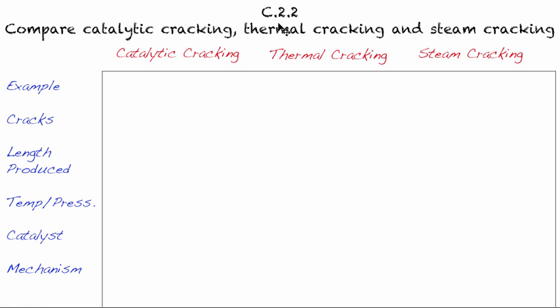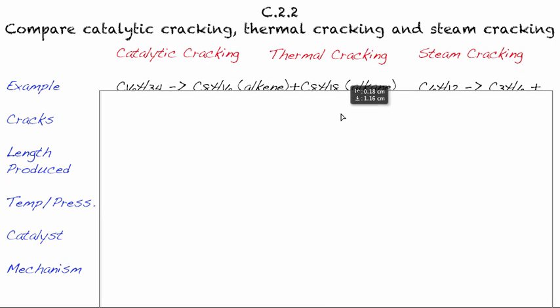So today we're going to do C.2.2.2. We're going to compare catalytic cracking with thermal cracking and steam cracking. Cracking is basically just like it sounds, you're breaking something down. In this case, we're breaking down the long chain hydrocarbons that come from crude oil, and we're breaking them down into smaller molecules, which are more useful for some of our engines and industrial processes. We're going to look at three different types of cracking, starting with catalytic cracking, because that makes most of our consumer end alkanes now.